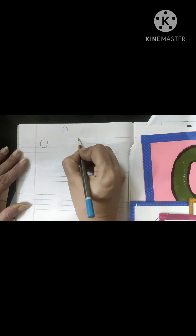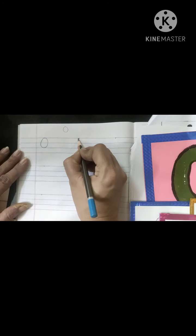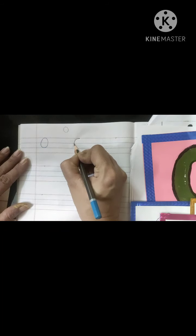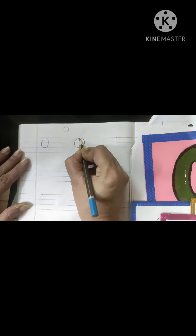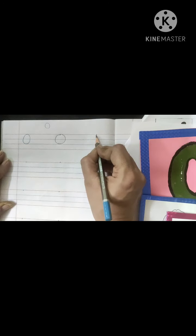Starting from the dot make a round and touch the bottom purple line. Niche purple line ko touch karna hai. And then again go round come back to the dot. Very simple.